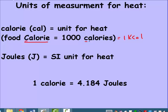Joules is our main unit for heat, abbreviated with a capital J. You should know the conversion between calories and joules: one calorie is 4.184 joules.